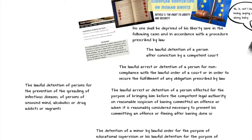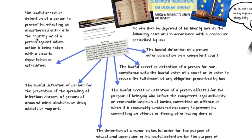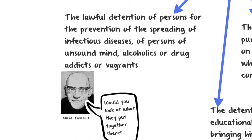There is also lawful detention of persons for the prevention of the spreading of infectious diseases, persons of unsound mind, alcoholics, drug addicts, or vagrants — this is the one we're going to focus on specifically. And finally, lawful arrest or detention of a person to prevent unauthorised entry into the country, or of a person against whom action is being taken with a view to deportation or extradition. All of these features of Article 5 can be traced to the conception of the modern nation state.